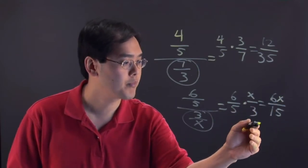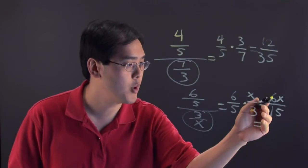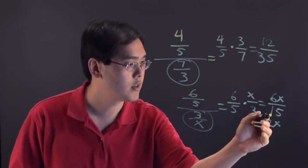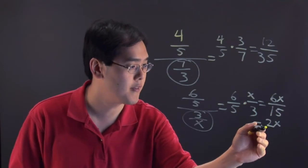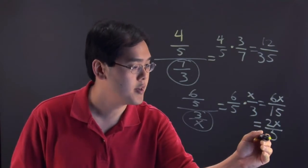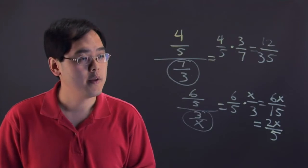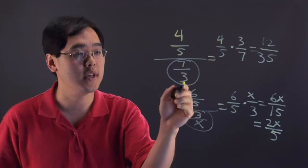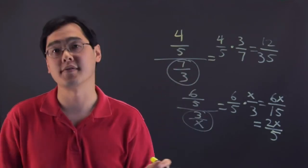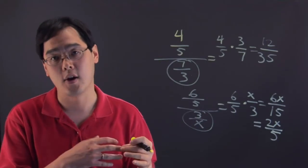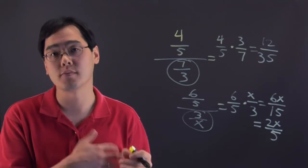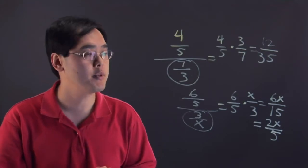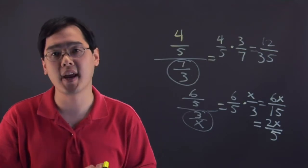You can reduce that — both of them reduce by 3, so you have 2x over 5. I want to stress though, you can only do this if your denominator has only one term. If you have more than one term added or subtracted, you really can't do the reciprocal. I'm Jimmy Chang and that's a brief introduction to reciprocating the denominator.